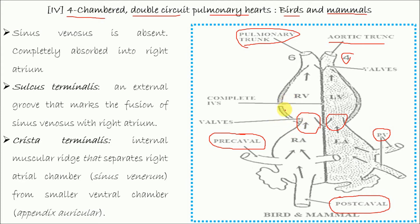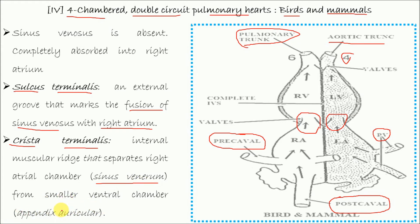Some additional points: the sulcus terminalis is an external groove that marks the fusion of the sinus venosus with the right atrium. The crista terminalis is an internal structure that separates the sinus venarum from the appendix auricularia; the appendix auricularia is small whereas the sinus venarum is larger in size.